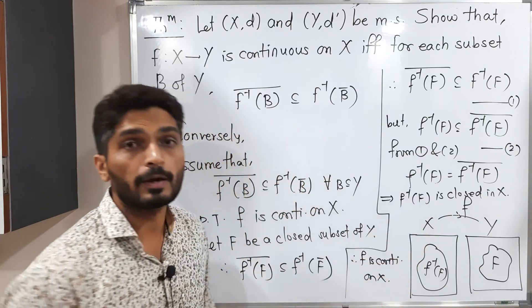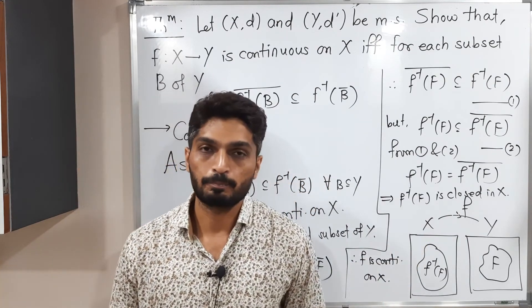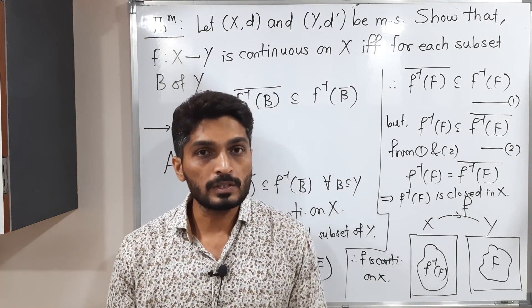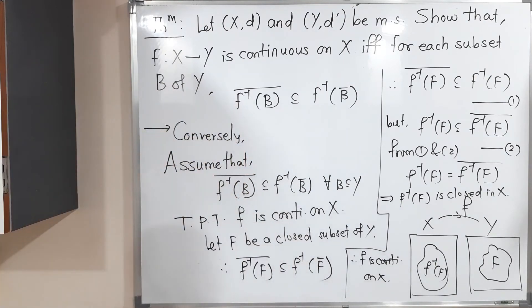So we have proved both directions. In both ways we have shown the equivalence, completing the full proof that f is continuous if and only if f⁻¹(B-bar) contains f⁻¹(B)-bar for every subset B of Y.